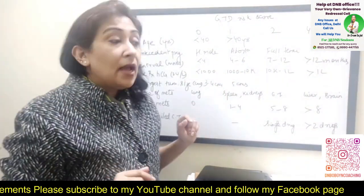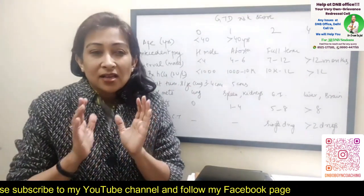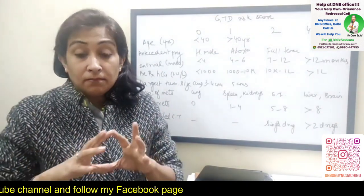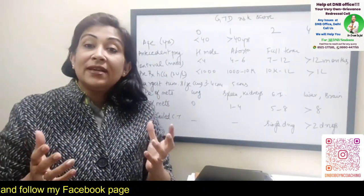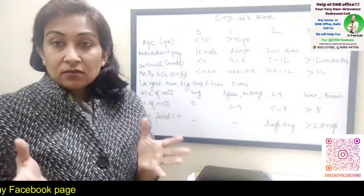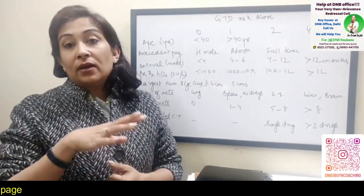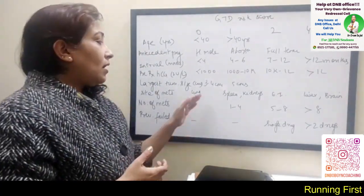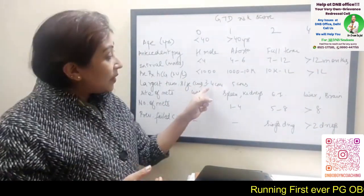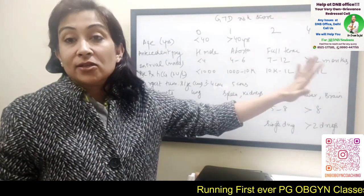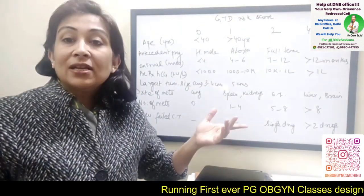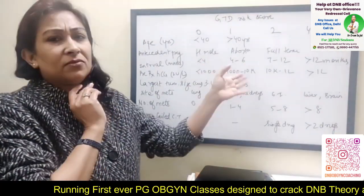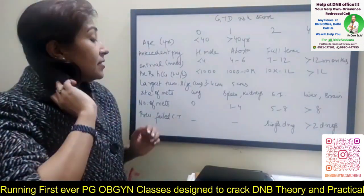For the largest tumor size variable: this is usually not reported unless an ultrasound clearly shows a growth — say, three by four centimeters. Mostly the finding is just hyperplastic endometrium or theca lutein cysts, so this variable has limited practical impact on risk scoring. Three to four centimeters is lower risk, and more than five centimeters is higher risk, but since it's rarely documented in reports, this variable doesn't shift the score much in clinical practice.